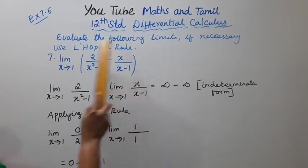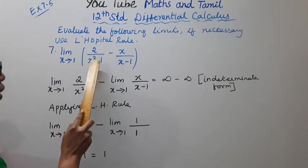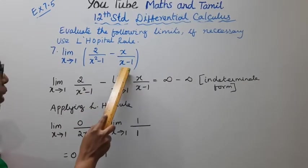Evaluate the following limits if necessary, use L'Hôpital rule. Limit x tends to 1, 2 by x square minus 1 minus x by x minus 1.